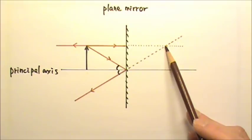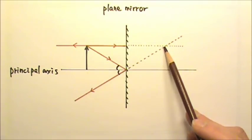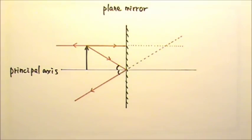So this is where the image of the tip of the arrow is formed, and the observer would see that the image is right here. And this is the image of the object formed by this plane mirror.